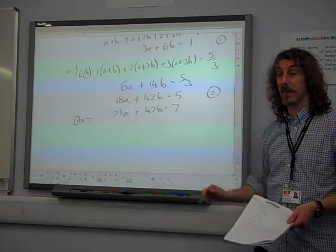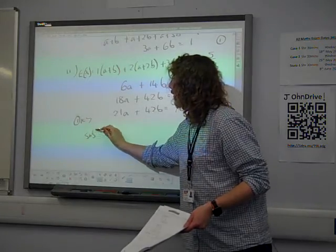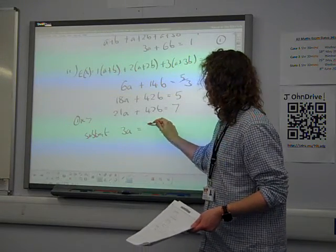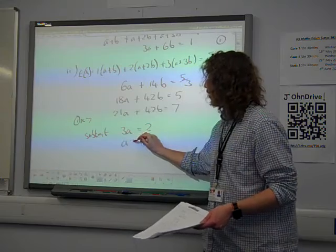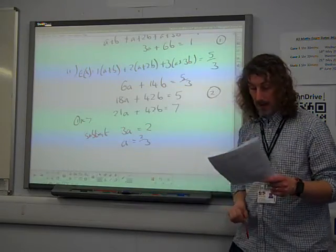And if I then subtract, that gives me 3a is equal to 2. So, I quickly get a is 2 thirds.